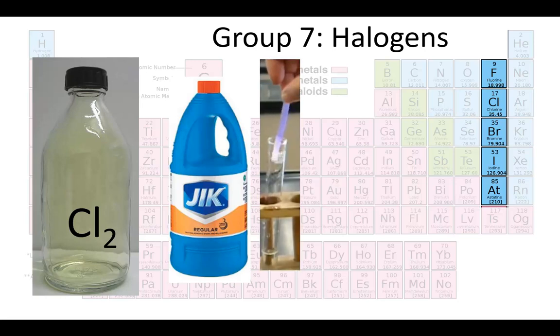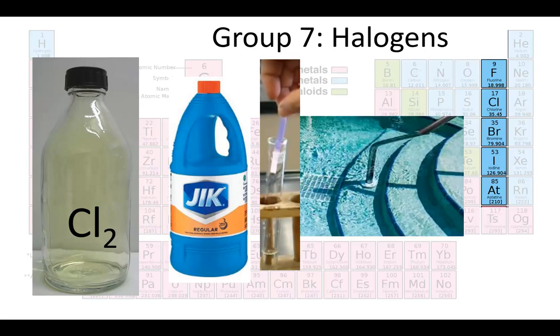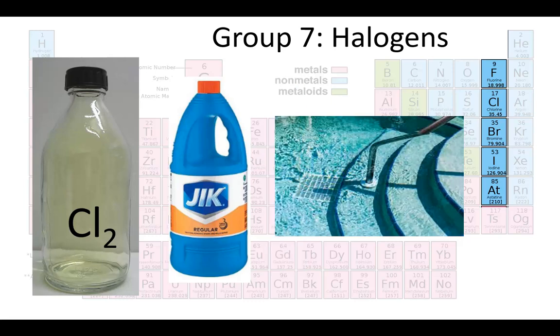Chlorine breaks down color pigments. That's why we can use it as a bleach. It also breaks down bacteria and algae and other organisms. That's why we can use it as a disinfectant and a pool cleaner.